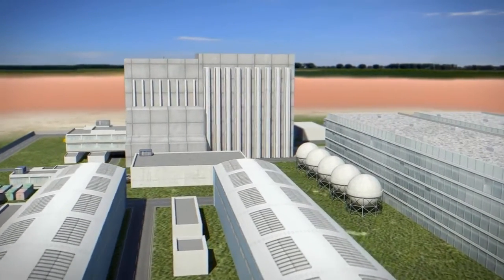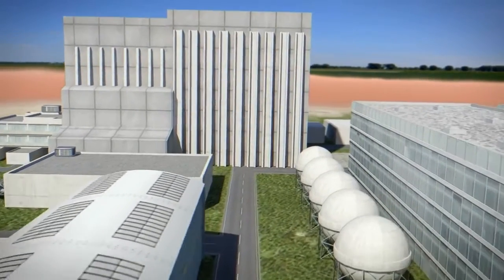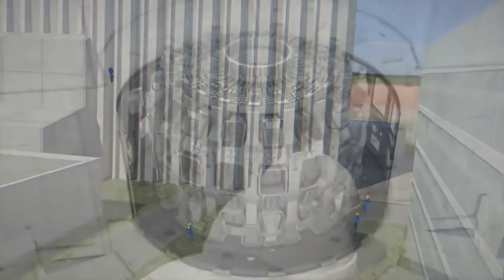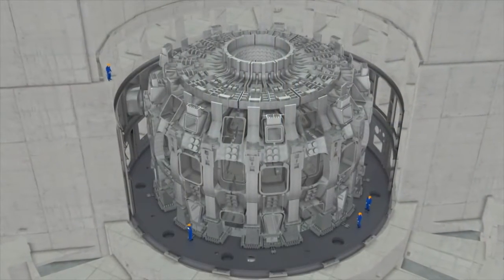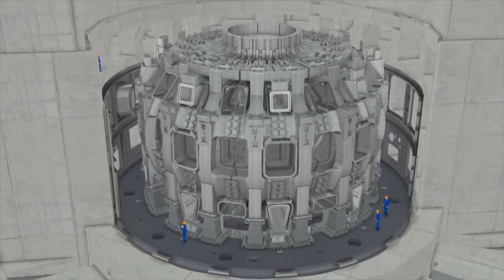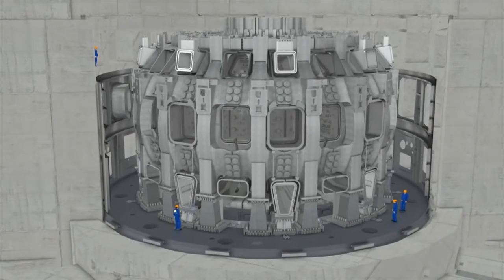The principal assembly activities will be performed in the tokamak building, where the ITER device will be installed inside of a partially embedded concrete bioshield. For the duration of assembly activities, the tokamak building will be operated as a clean area and maintained at a constant temperature to avoid dimensional changes in the largest components.